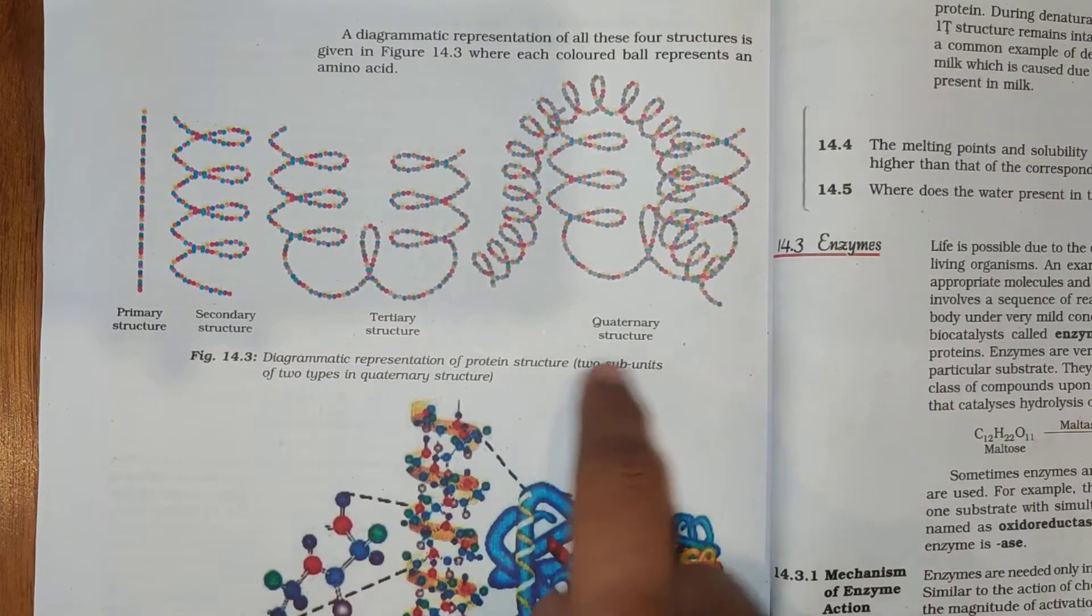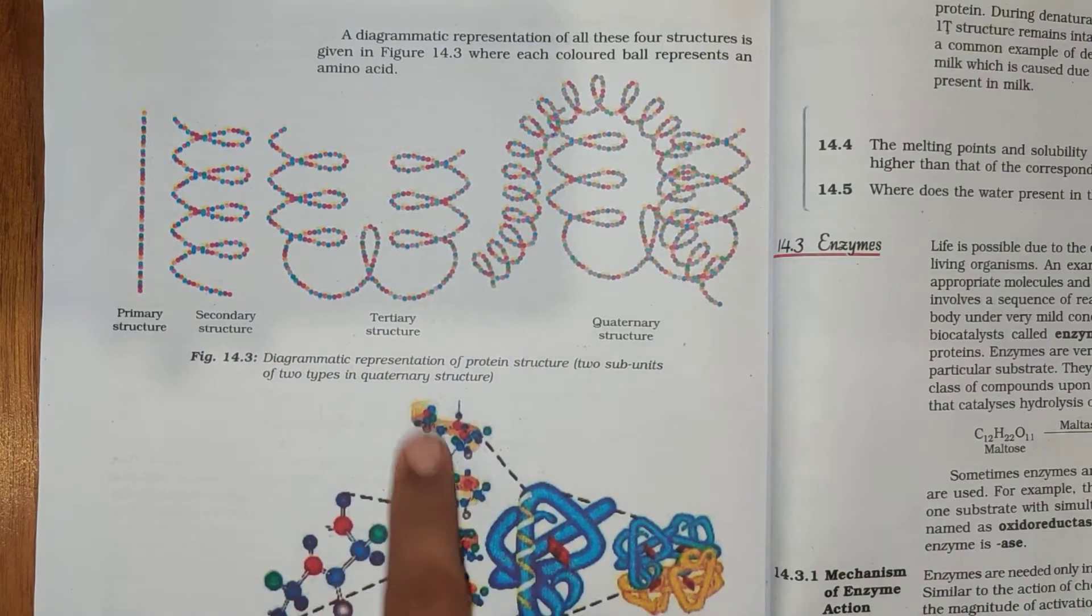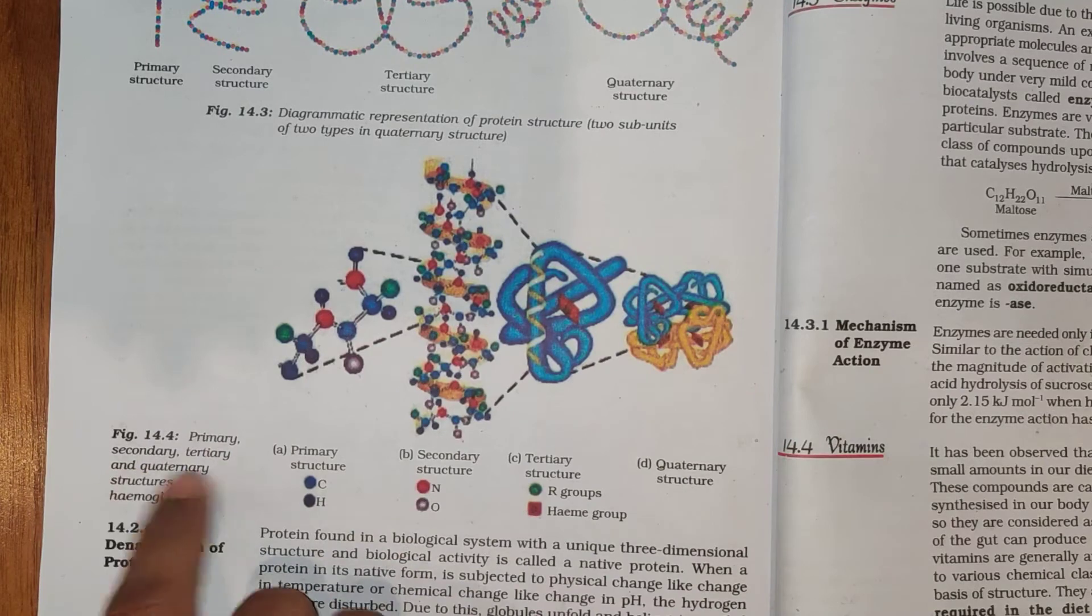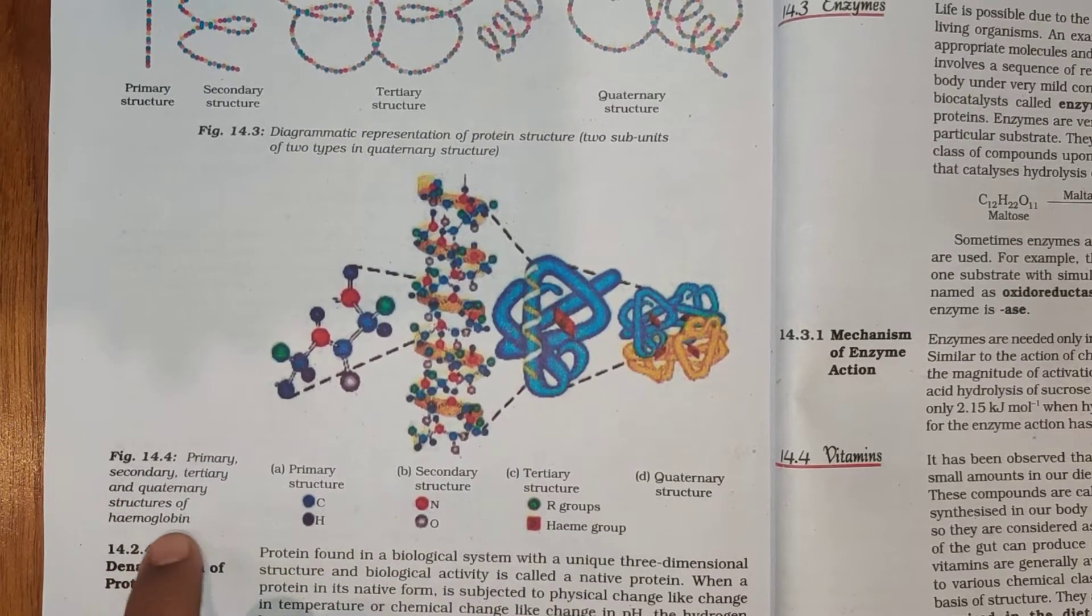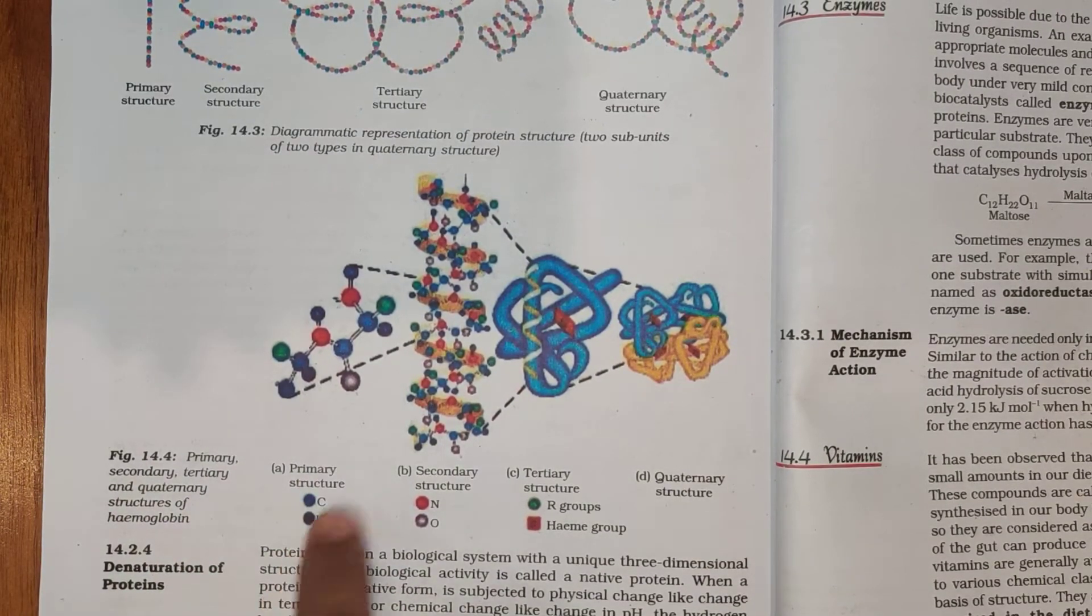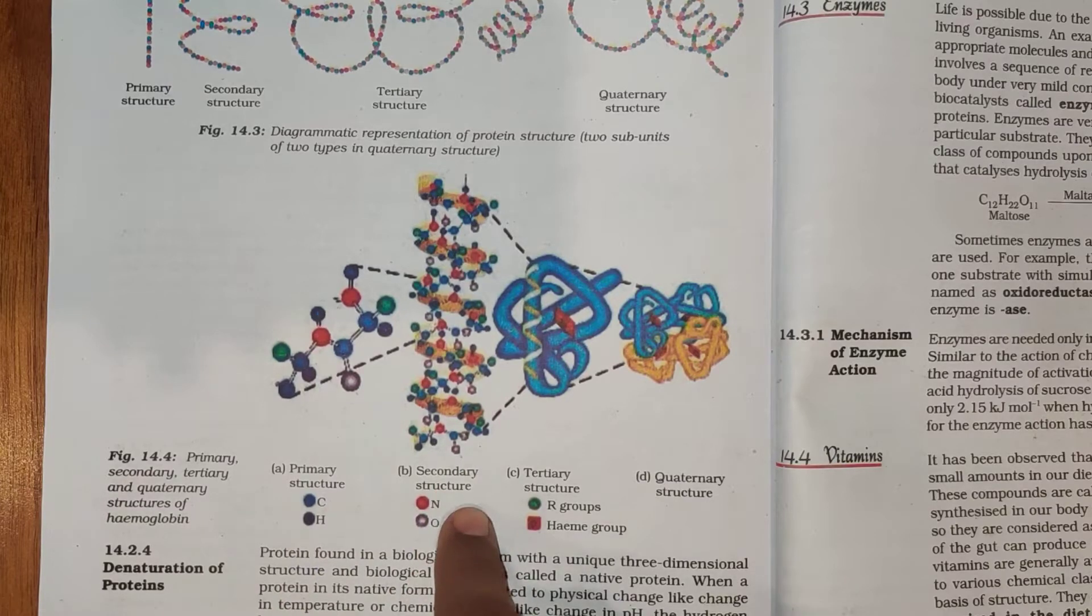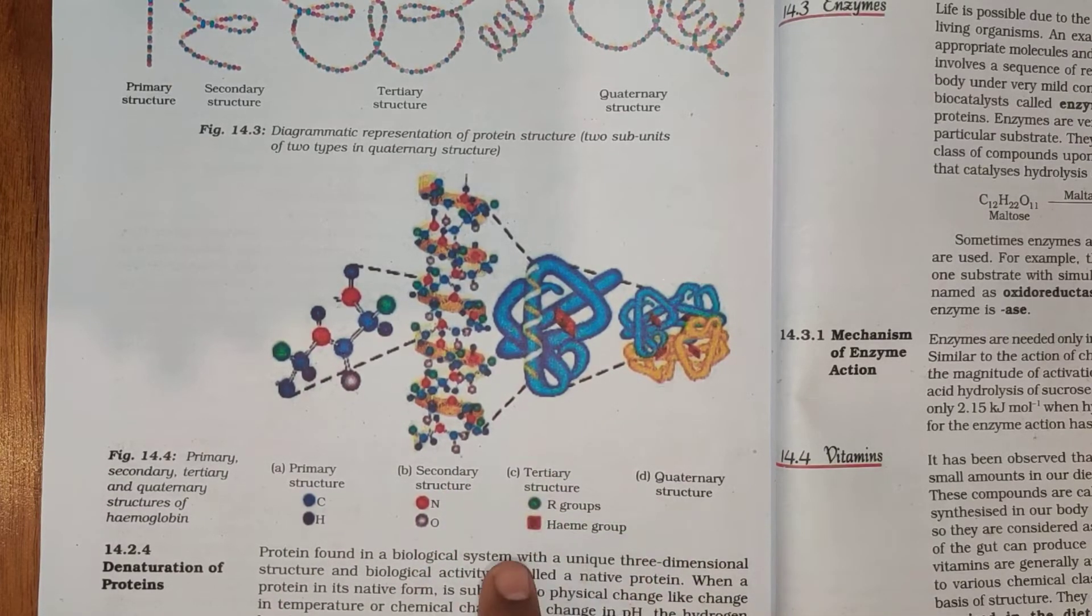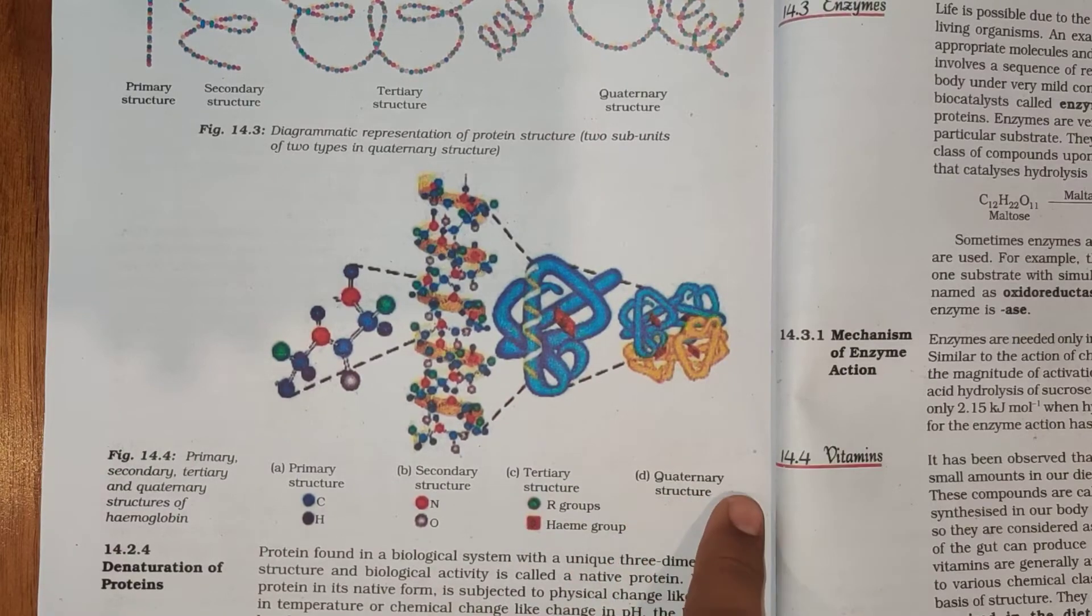Diagrammatic representation of protein structure: Two subunits of two types in the quaternary structure. Primary, secondary, tertiary and quaternary structures of hemoglobin. Primary structure consisting of carbon and hydrogen. Secondary structure consisting of nitrogen and oxygen. Tertiary structure consisting of R groups and Heme groups. And quaternary structure.